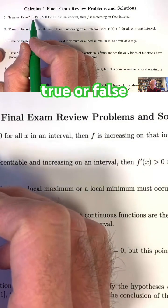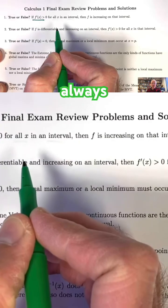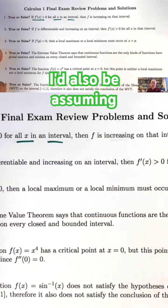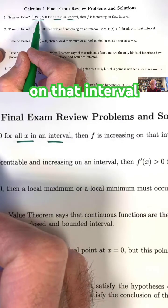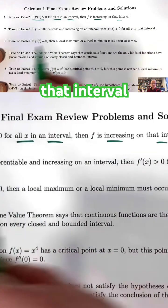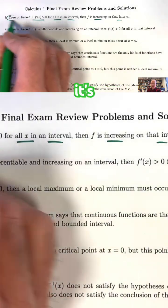Number one, true or false? If f prime of x is always positive for all x in some interval, therefore I'd also be assuming implicitly that f is differentiable on that interval, the conclusion is then f is increasing on that interval. This is true. It's a theorem.